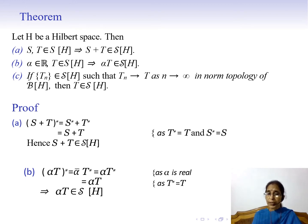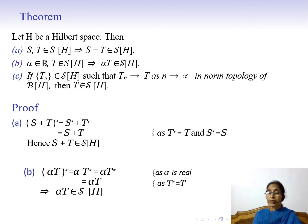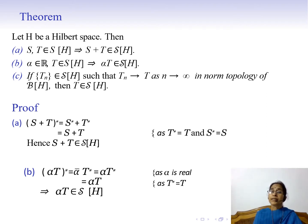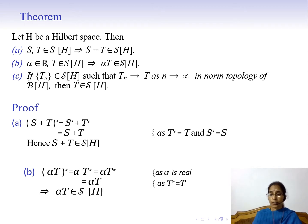Now we prove result B: we show αT is self-adjoint. We find its Hilbert adjoint: (αT)* = conjugate(α) · T*. Since α is a real number, conjugate(α) = α. And since T is self-adjoint, T* = T. Therefore (αT)* = αT, which implies αT is a self-adjoint operator on H.